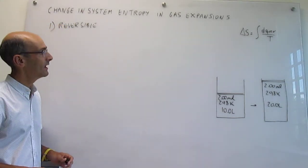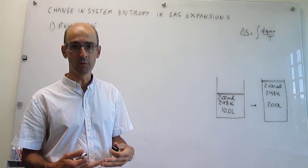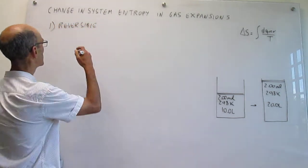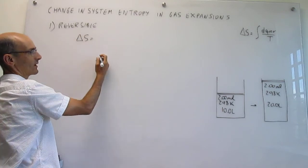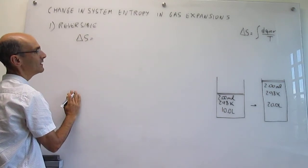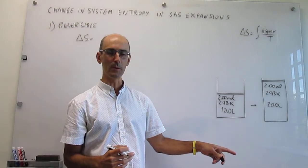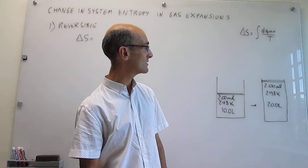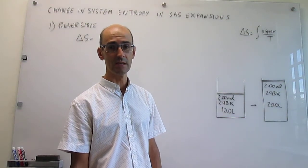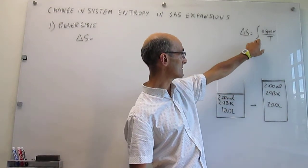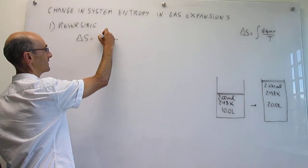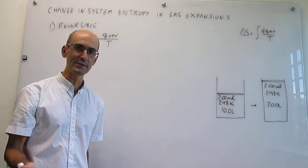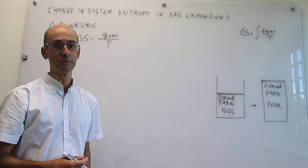To calculate the change in entropy in the system, we take the integral of the differential of Q-rev over T. Notice that this process is isothermal, so the temperature doesn't change. Since T is constant, it comes out of the integral, and the integral simply gives us Q-reversible over T. That's a great advantage of isothermal processes — the calculation of the change in entropy is quite straightforward.